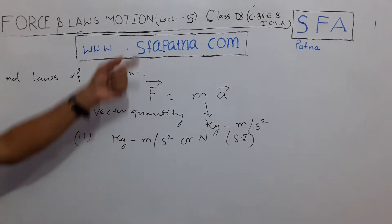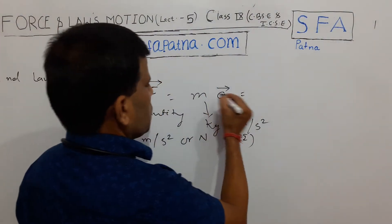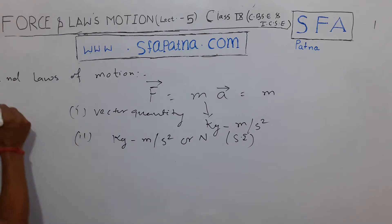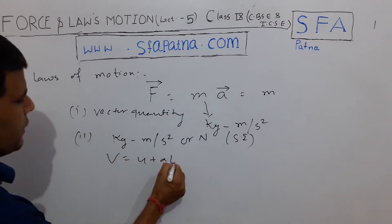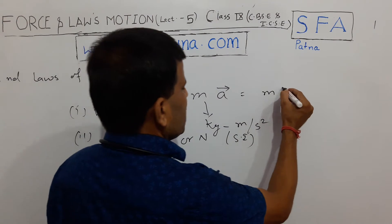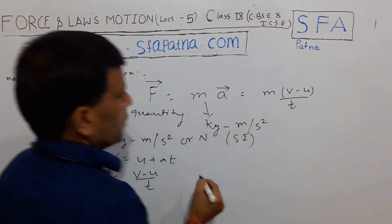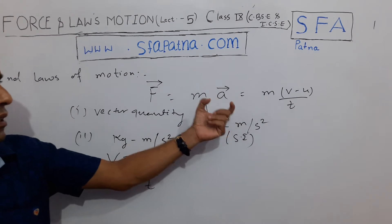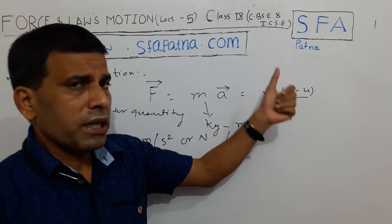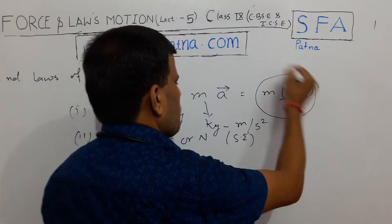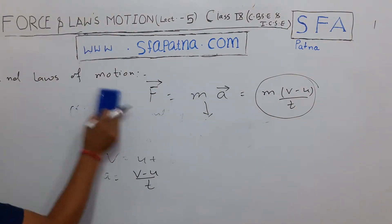In Lecture No. 4's formula, Force equals mass into acceleration. This can also be seen using the equation of motion: V equals U plus AT, where acceleration equals (V minus U) divided by T. So Force equals mass into (V minus U) divided by T. This formula is also very important for solving problems. Both formulas are important for solving numerical problems.